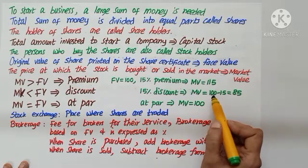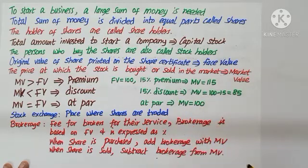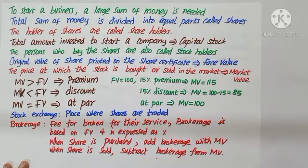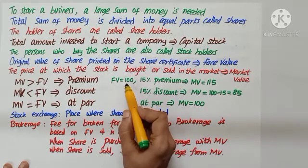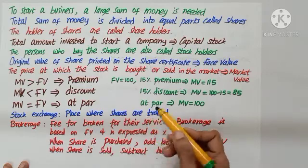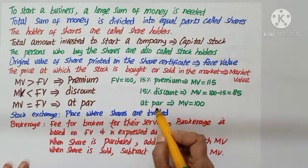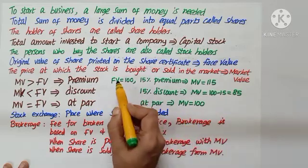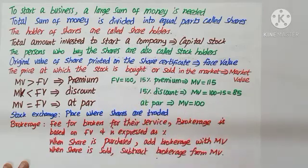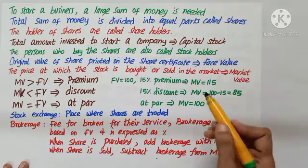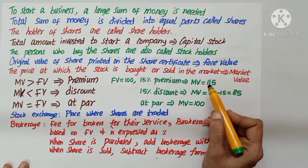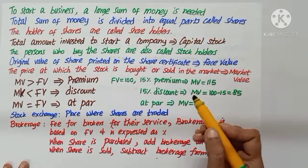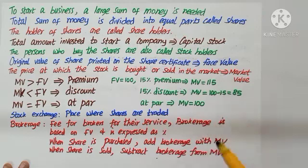So this we will say quoted at discount. Sometimes face value is 100 and we sell it at par. The word at par tells us market value and face value are equal. So what is market value? The price at which the stock is bought or sold in the market.